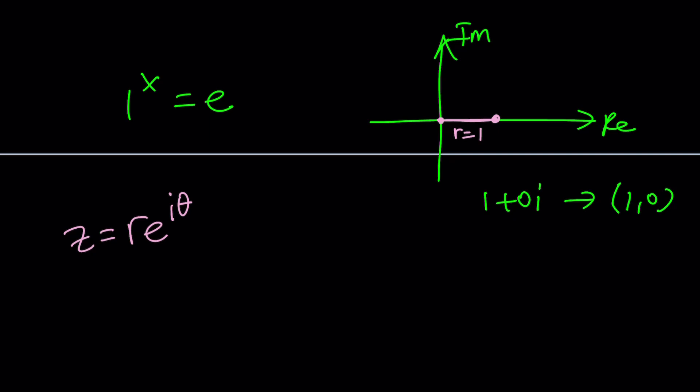1 can be written as r, which is 1, e to the power i times 2 pi. We want to consider multiples of 2 pi, so we multiply that by n. We could also write it as e to the power 2 pi n i, putting the i at the very end. This is how 1 is expressed.